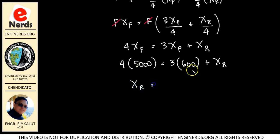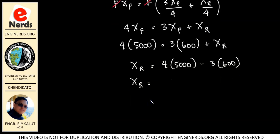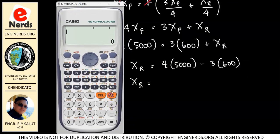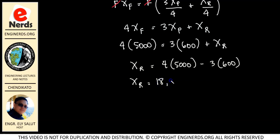XR is equal to 4 times 5,000 minus 3 times 600. So let me put it on this side so we can see the result. So we have 4 times 5,000 minus 3 times 600 which is 18,200 mg per liter. So this is our final answer for this problem.